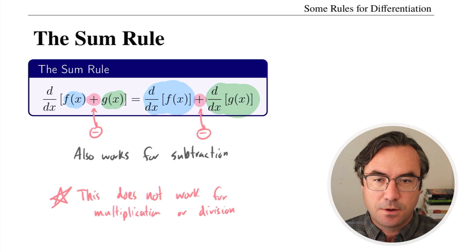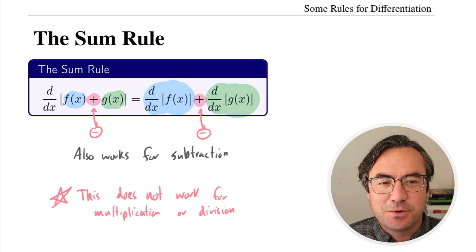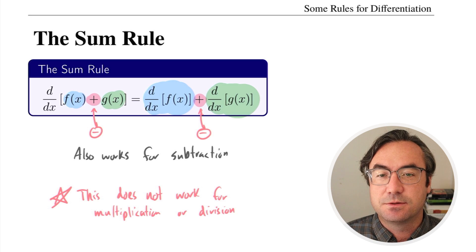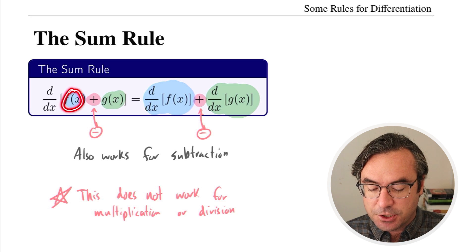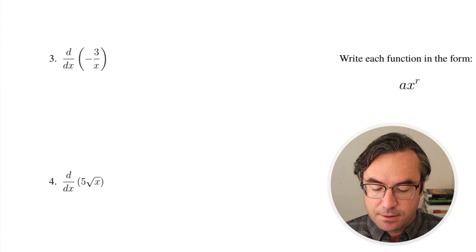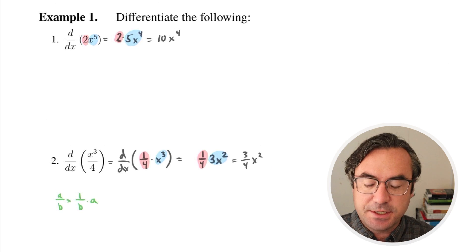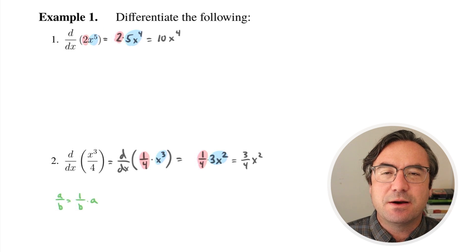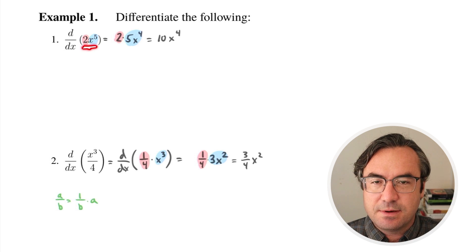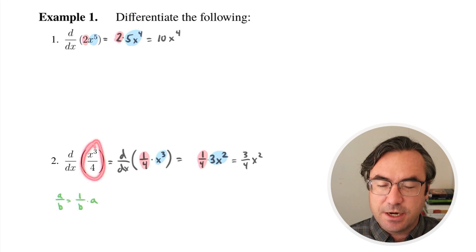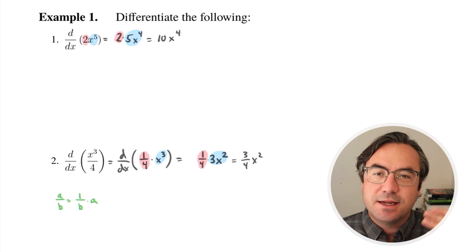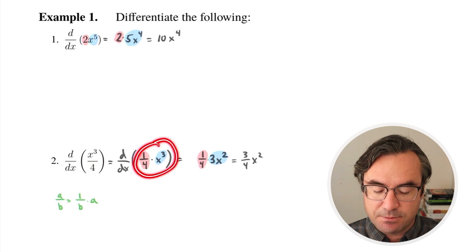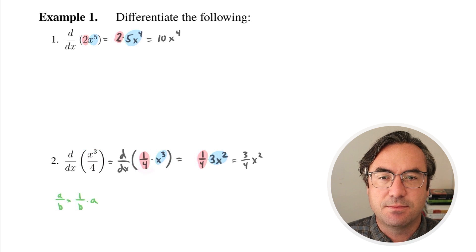You might be wondering: we just did multiplication — there was division in one of the examples. When I say multiplication and division, I mean multiplication and division between two variable terms. Going back to the two examples we did, there is multiplication, but we were multiplying a constant with a variable — not two variable terms. And yes, there is a quotient, but it's only one variable term on top divided by a constant. So we can break it apart and it just becomes a constant multiple issue.